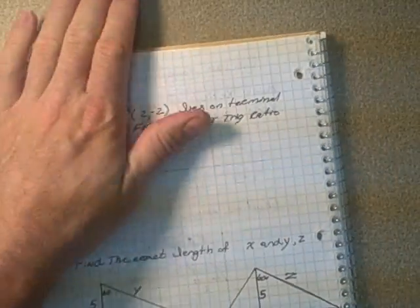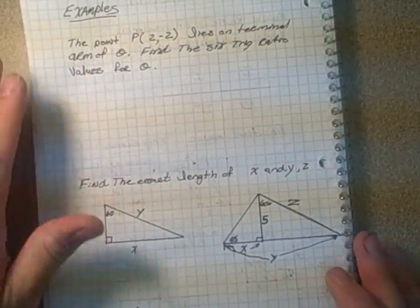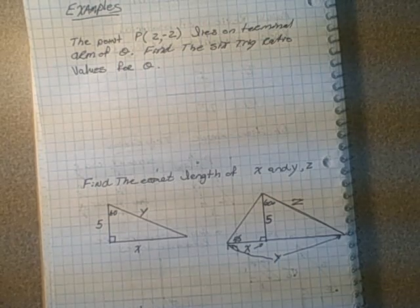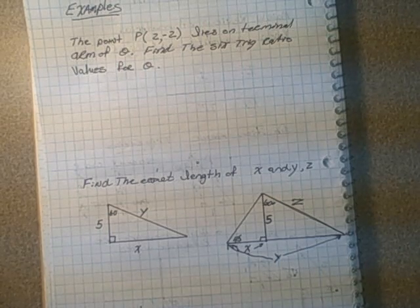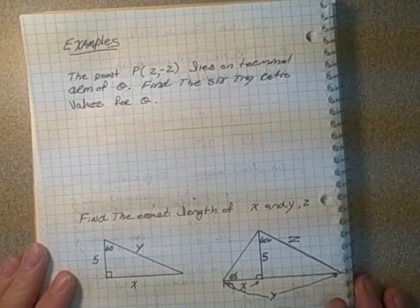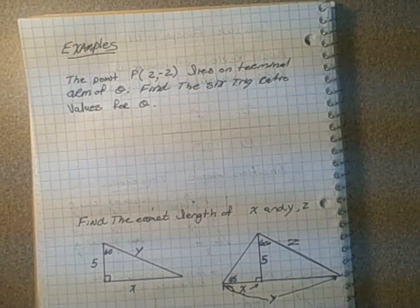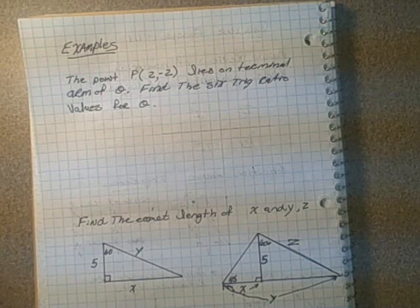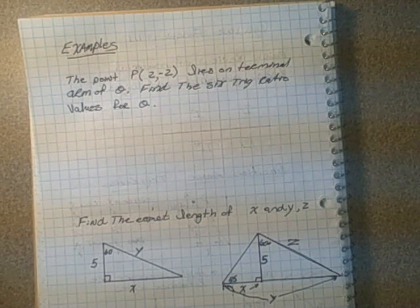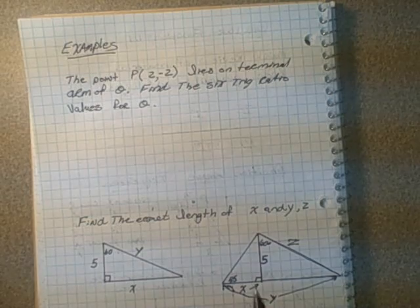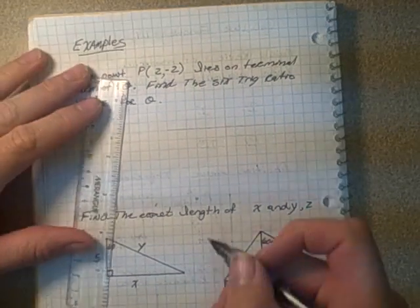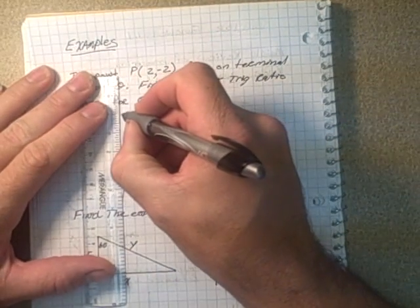And I've got a couple of examples here. And this one deals with the trigonometric ratios, and it's a bit of a review if you remember way back in A30. So if a point given to us is (2, -2) and lies on a terminal arm of an angle theta, find the six trigonometric ratios for theta.